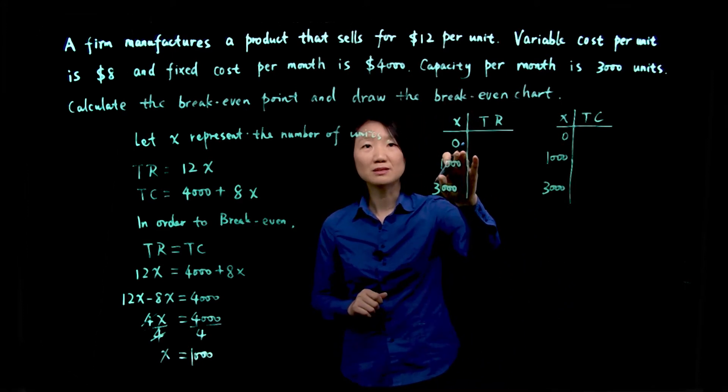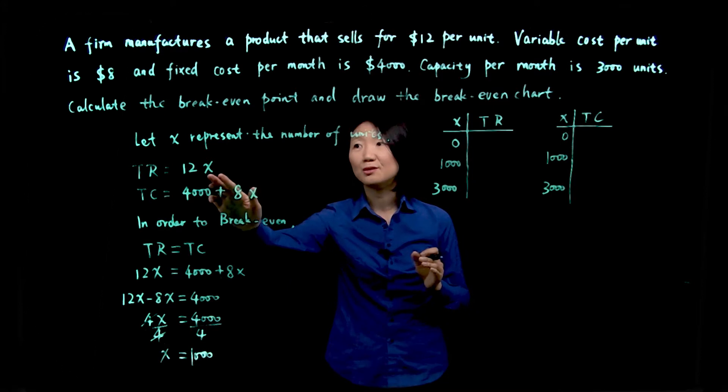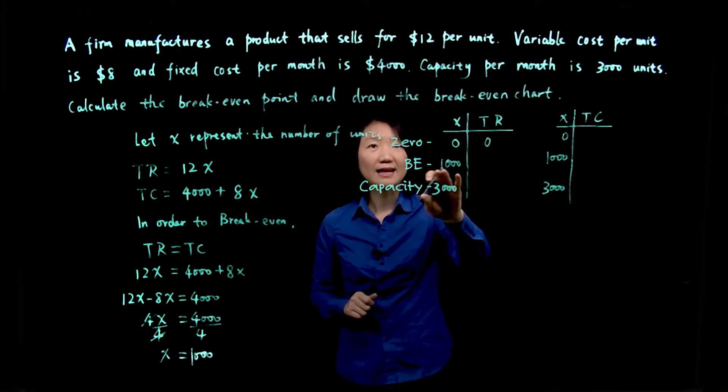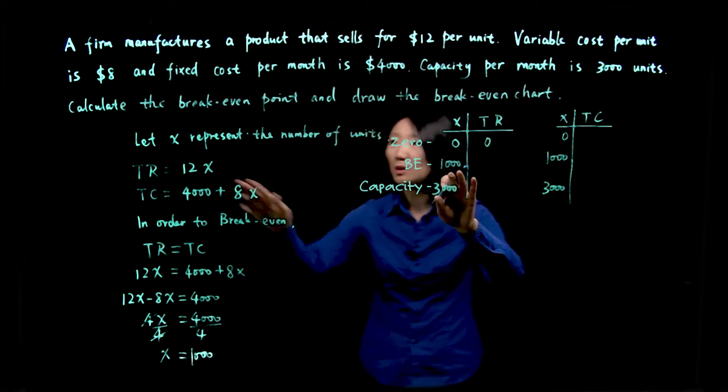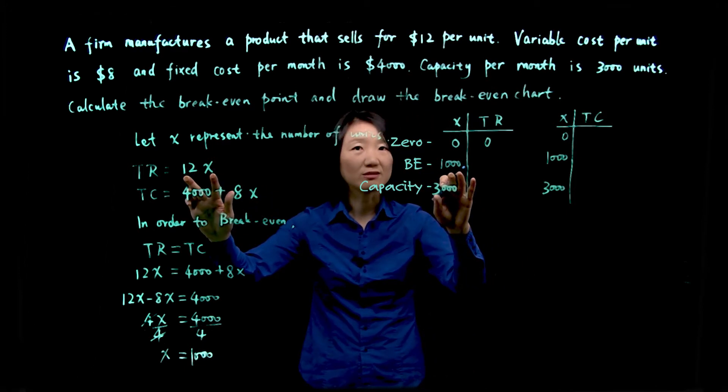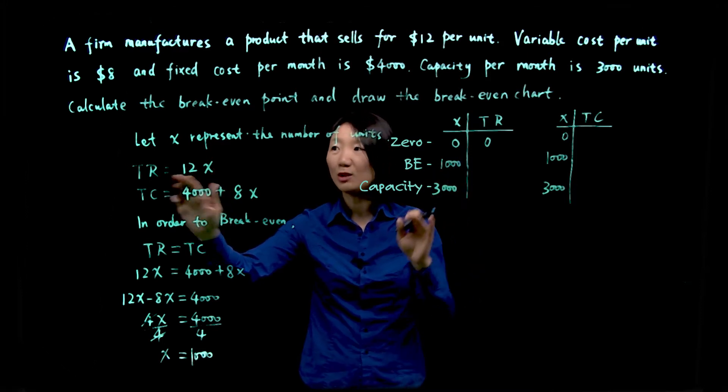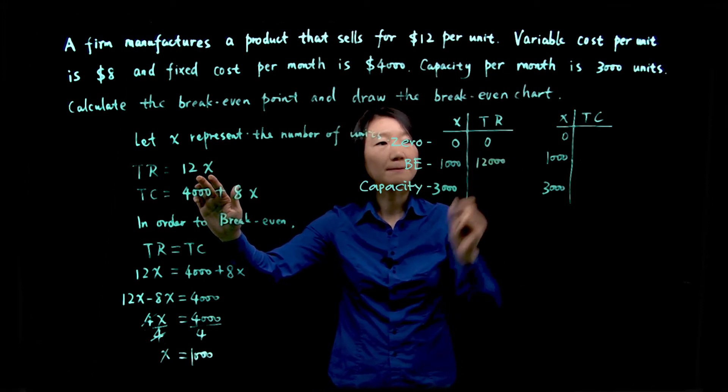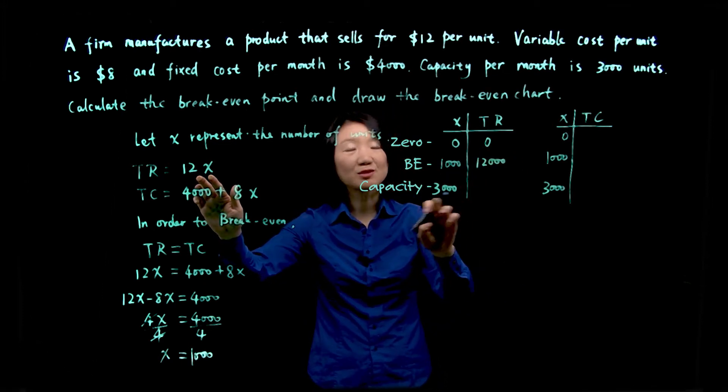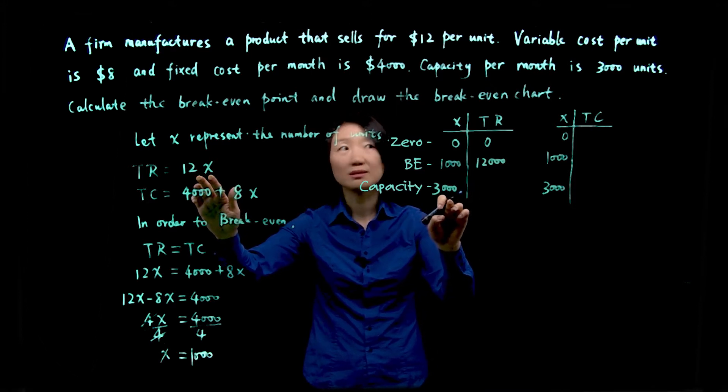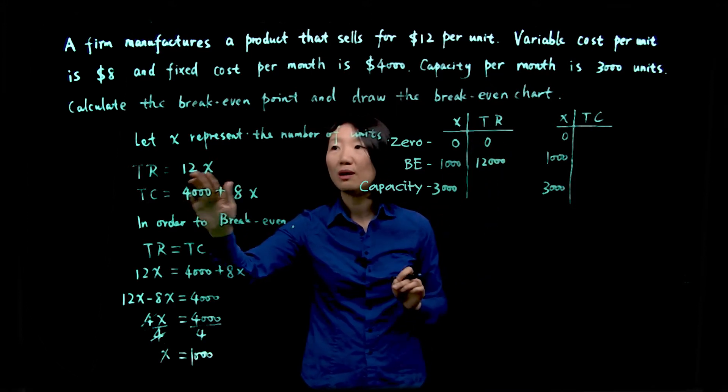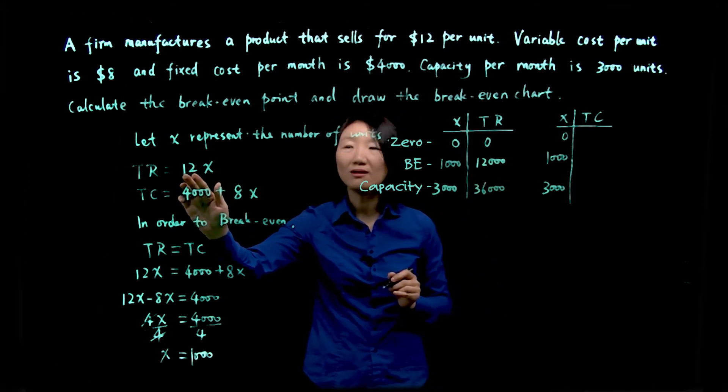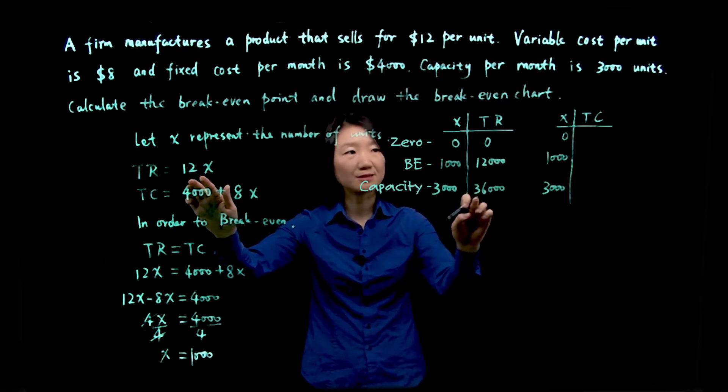So if the units produced is zero, as you see, zero times $12 is zero. So total revenue is zero. And at break-even point, 1,000, 12 times 1,000, so you just plug this 1,000 into the total revenue function, it would be 12,000. And if x is 3,000, if 3,000 units are produced, the total revenue, 12x, you plug it in, you'll get 36,000. So 12 times 3,000 is 36,000.